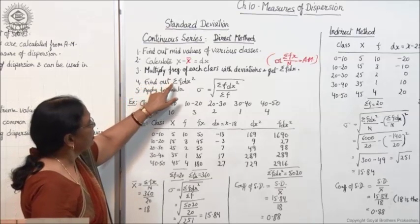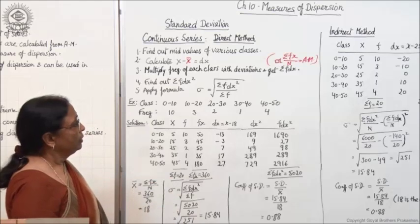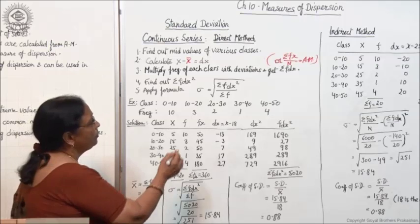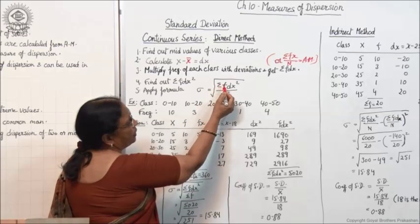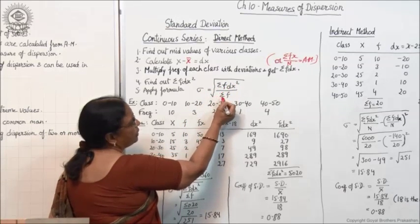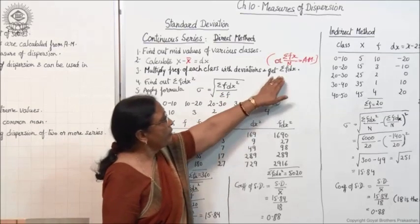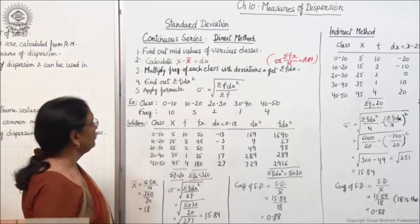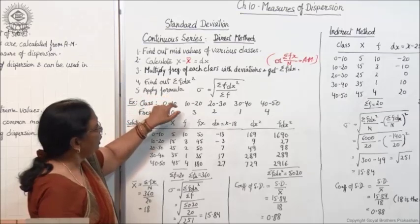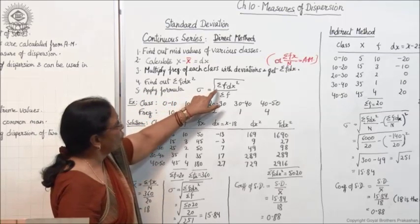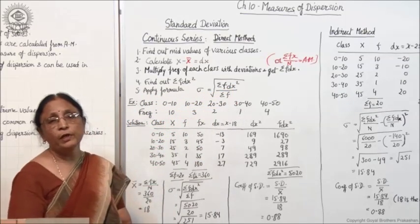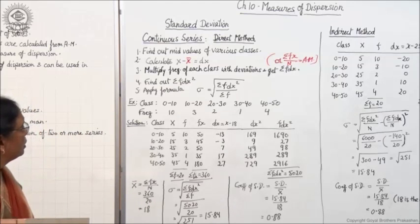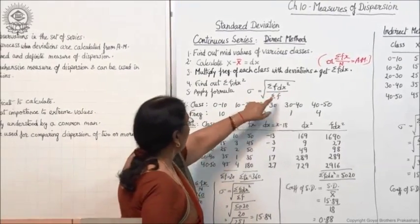The next step is to find out Σfdx². You have to make the square of the fdx column, because standard deviation is √(Σfdx² / Σf). So when you have calculated Σfdx, make a square of it so that you can put the value in the formula. Next, apply the formula: standard deviation equals √(Σfdx² / Σf). You have to put the values — Σfdx² upon Σf.